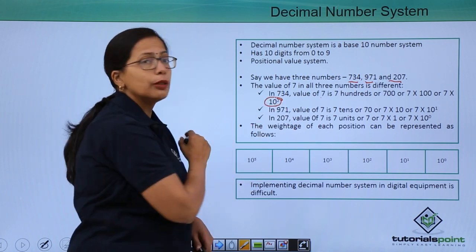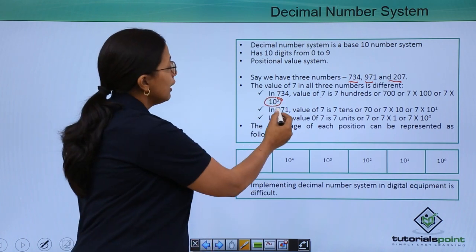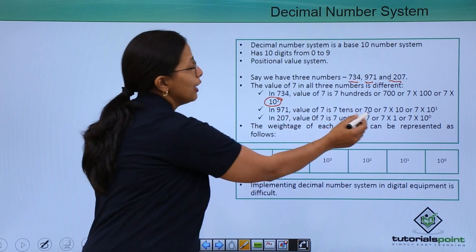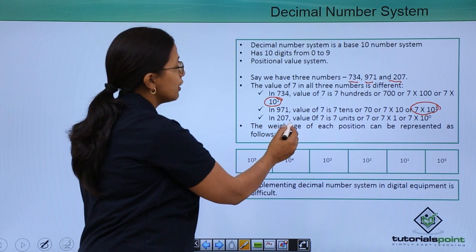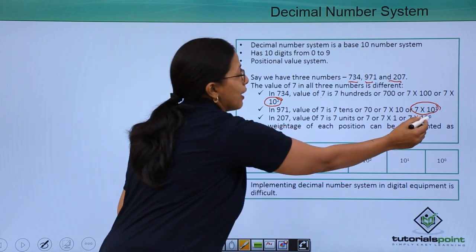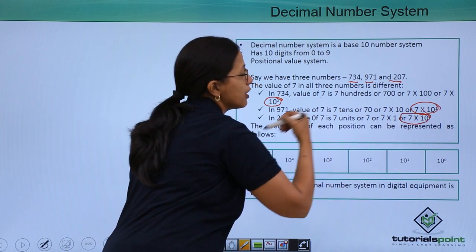7 into 10 to the power of 2. In 971, the value is 7 into 10 to the power of 1. In 207, the value of 7 is 7 into 10 to the power of 0.